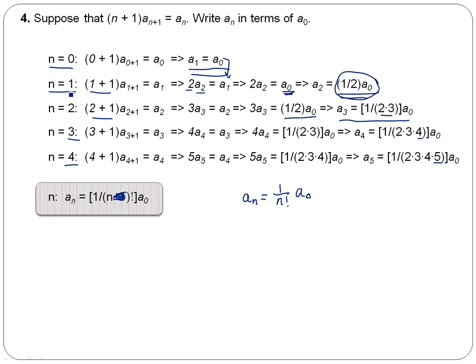So, for our first term, if we test that formula, our first term is 1 over 1 factorial a_0. And 1 factorial is just 1. So, a_1 is equal to a_0. That's what we have here.